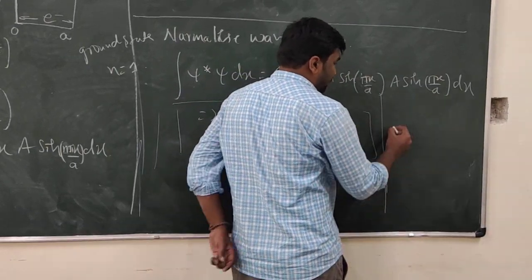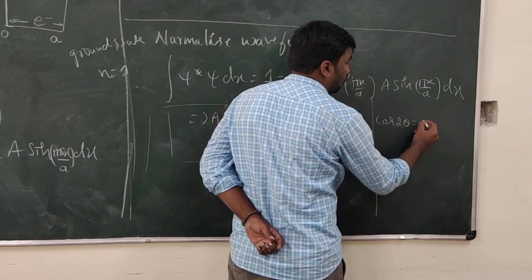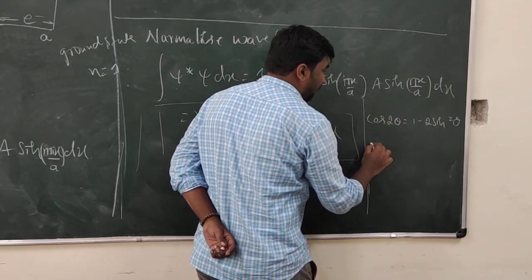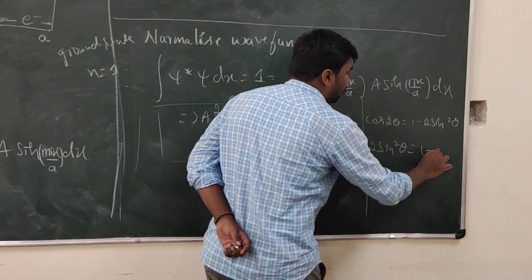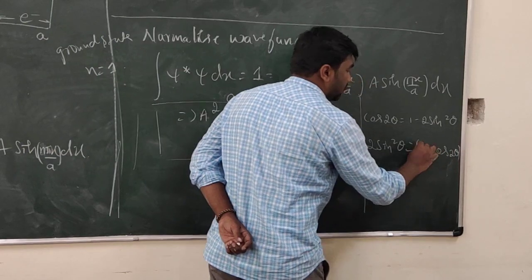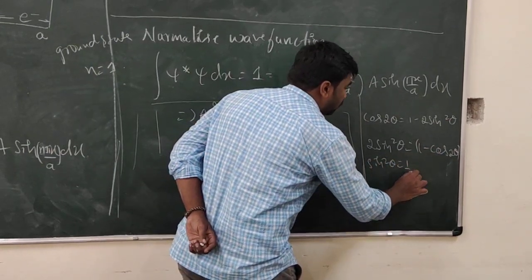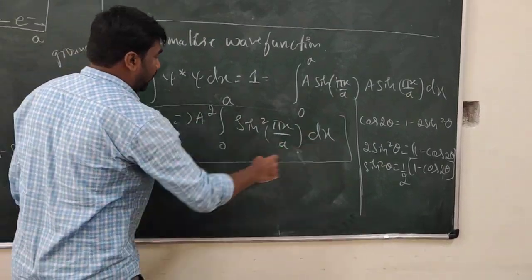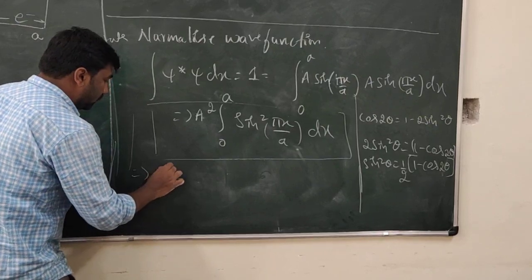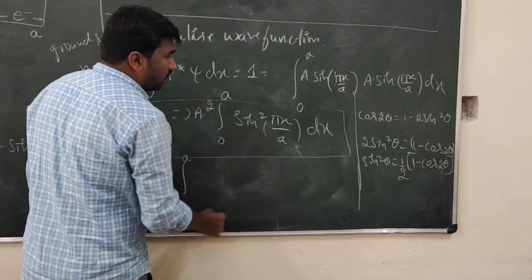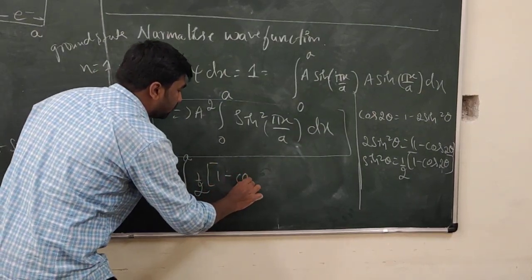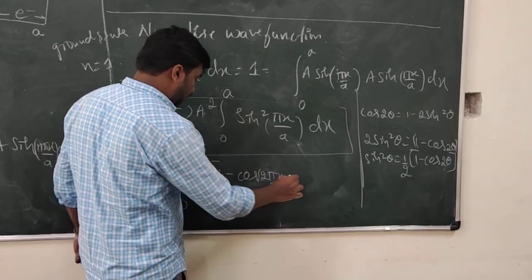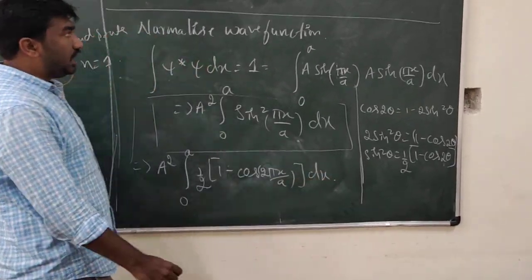We use the trigonometric identity: sin²θ = (1 - cos2θ)/2. So sin²(πx/a) = (1/2)(1 - cos(2πx/a)). Substituting this into the integral, we get A² times the integral from 0 to a of (1/2)(1 - cos(2πx/a)) dx.